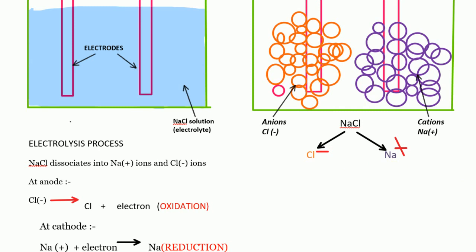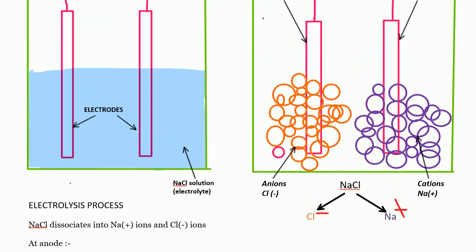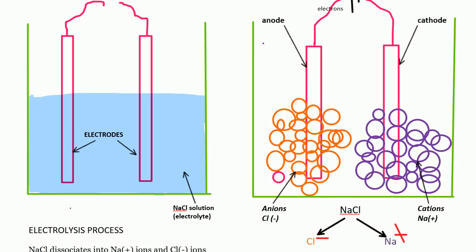Since the anode is positively charged, the Cl⁻ ions will get attracted towards the positively charged anode, because opposite charges attract each other. The anode is positively charged and Cl⁻ is negatively charged, so they attract each other and all the Cl⁻ ions will come and form towards the anode.